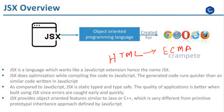JSX is a preprocessor step that adds XML syntax to JavaScript. You can definitely use React without JSX, but JSX makes React a lot more elegant and it is the recommended way. React uses JSX for templating instead of regular JavaScript. It is faster because it performs optimization while compiling code to JavaScript. As compared to JavaScript, JSX is statically typed and type-safe — that is, most of the errors can be caught during compilation.